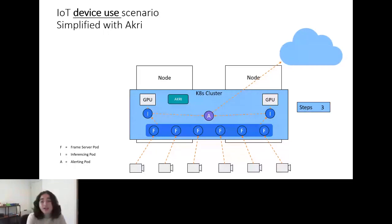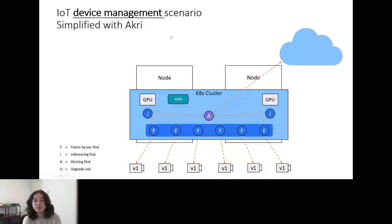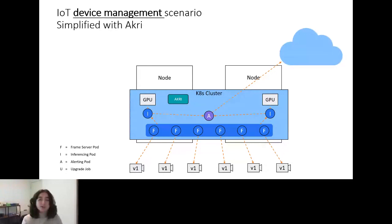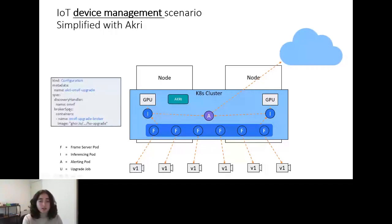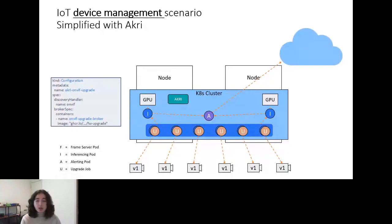Let's look at that second bucket: device management. In the same scenario, our objective is now to not only use the devices but also manage them — specifically, perform a firmware upgrade of these cameras. Let's say they're all at firmware version 1 and our goal is to get them to version 2. We can do this with another Akri configuration. In this case, once again we're using ONVIF to discover the IP cameras, and our workload is now going to be a job with a specified image that performs the firmware upgrade. Once you apply that to your cluster, you'll see an upgrade job deployed to each camera, and the result is that the cameras go to version 2.